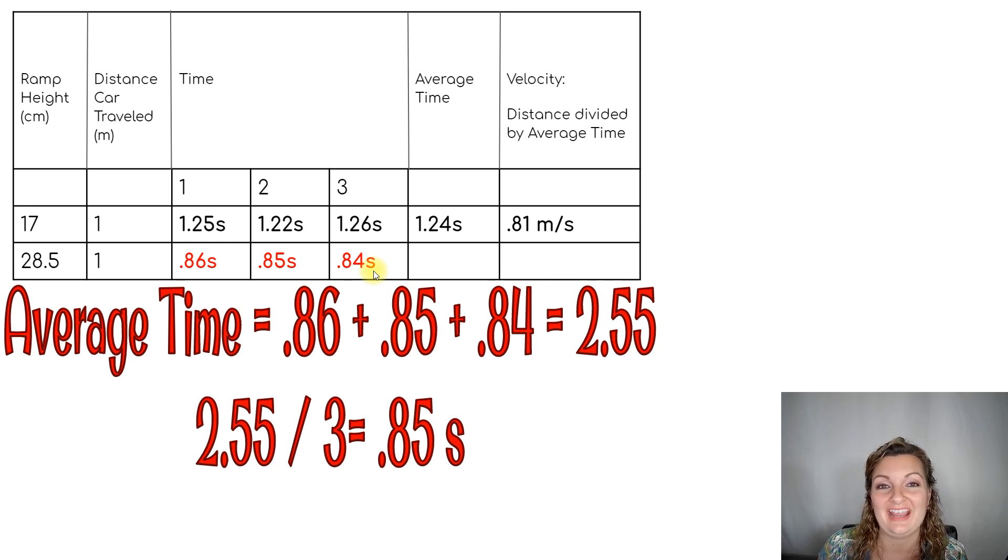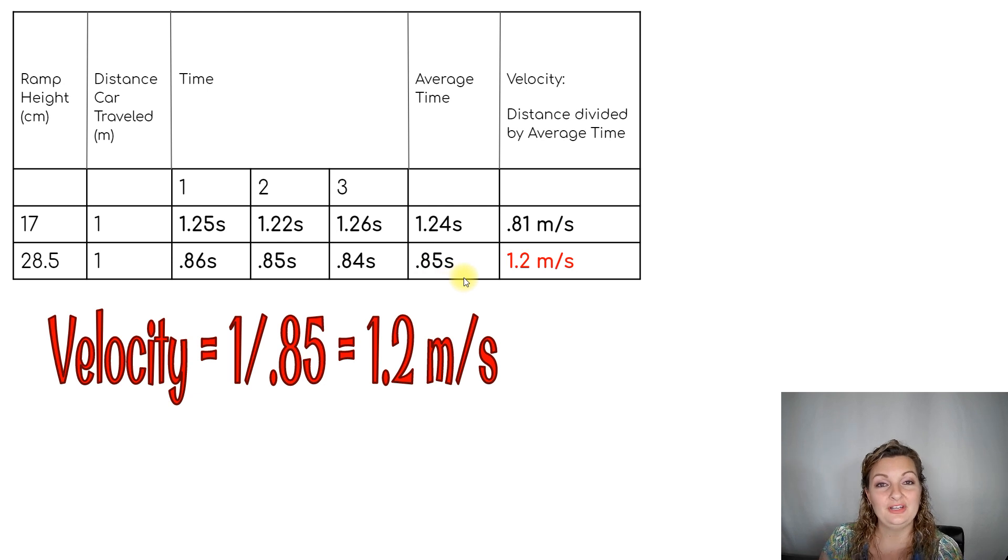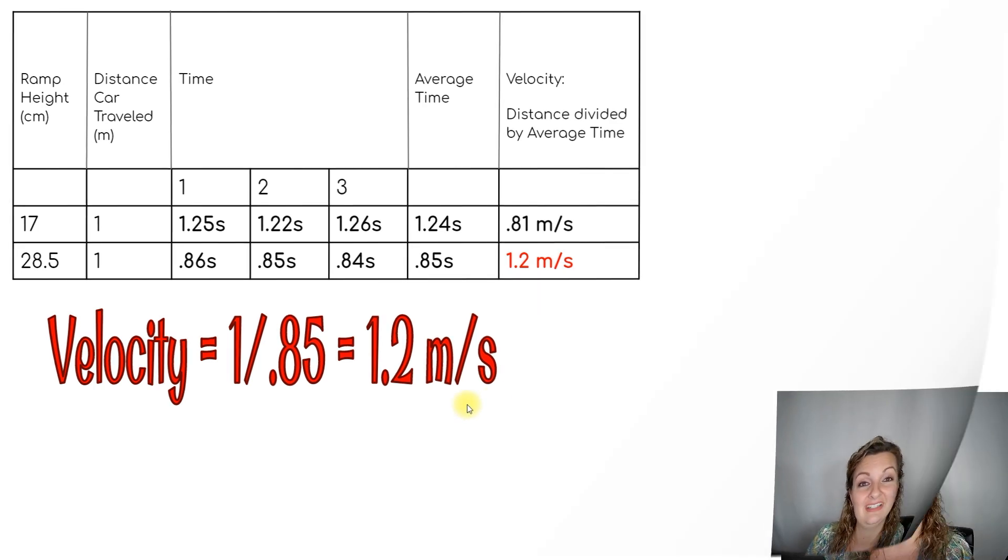Now, once you get those trials done, you need to now take the average. So we're going to add up all of those, and I went ahead and got 2.55. Now again, you need to divide it by how many times you did this or how many trials we did: three trials. So we need to go ahead and divide that by three, giving us 0.85 seconds. So that is going to be your average time. Once you've calculated your average time, notice I went ahead and put it right here for us. We now need to calculate our velocity or speed that the car is traveling. So you do that by doing distance divided by average time, just like we did on the first height. So now we're going to do one divided by our 0.85, which we just found. Just divide that in your calculator and I got 1.2 and our units are going to be meters per second because distance divided by that time that we just calculated.